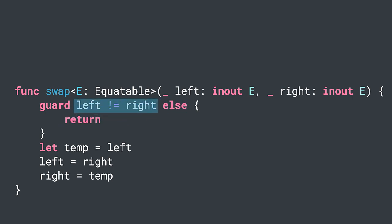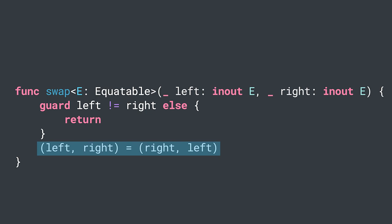Because we need to compare the arguments, they have to be of a type that conforms to the equatable protocol. And we can use tuples to make our code even shorter.